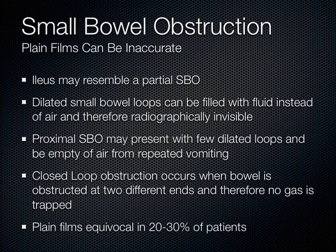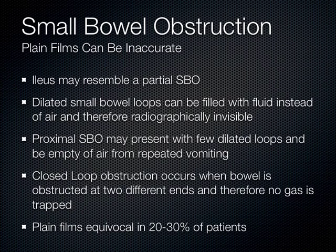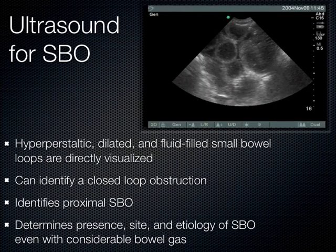Small bowel obstruction — you typically think to get an x-ray, but an x-ray needs to see an air-fluid level. If the patient doesn't have air and fluid together in the intestines, you will miss this diagnosis on x-ray. That's why x-rays have terrible test characteristics for small bowel obstruction. A closed loop obstruction — where bowel is twisted on both sides — has no air in the loop, so you classically miss it on x-ray. Ultrasound is really good at picking up both closed loop and proximal obstructions, with much better test characteristics than x-ray, though not as good as CT.